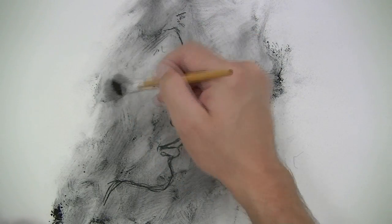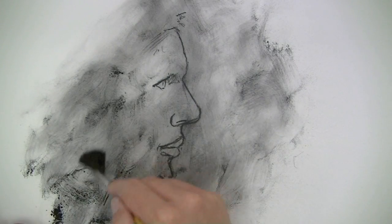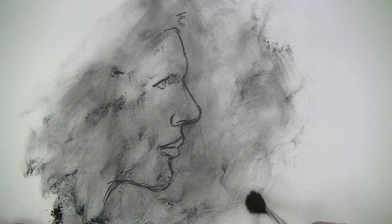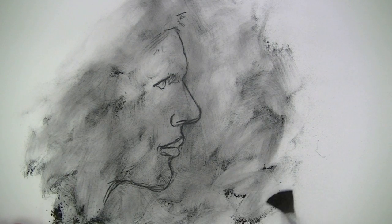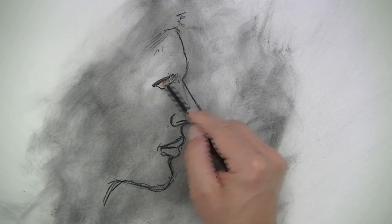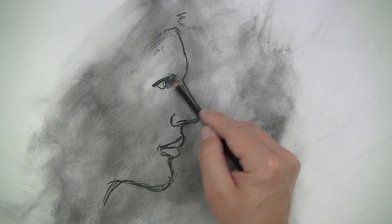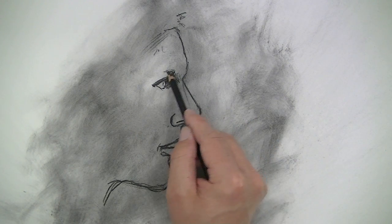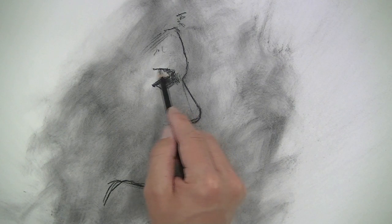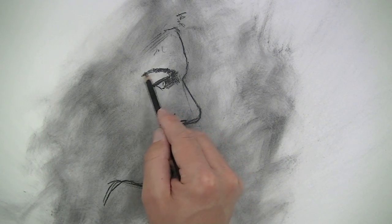This is going to help us establish a nice middle value that we can work from. When you're working on a white surface you have to work towards the darker values, and when you're working on a darker surface you have to work towards the lighter values. So by putting the powder charcoal down it establishes a nice mid-tone value. Once we've got that on the surface and we're happy with the application we can go ahead and go back into the drawing and continue to establish some of the dark and light areas that we see.